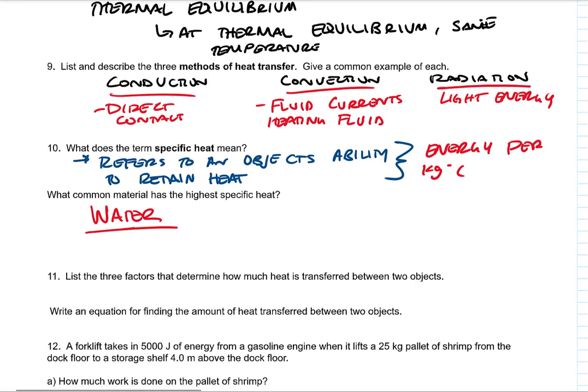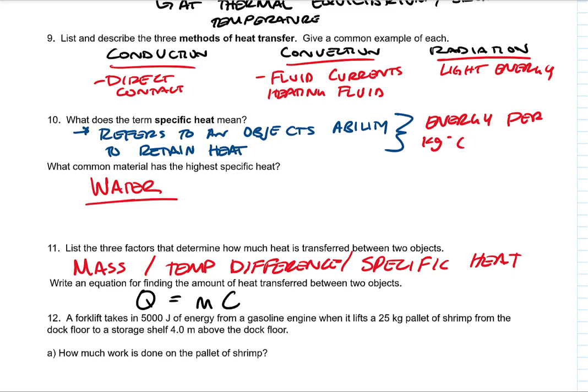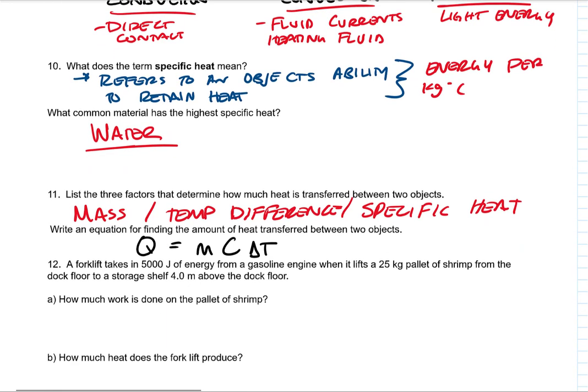List three factors that determine how much heat is transferred between the two objects: the mass of the objects, the temperature difference, and specific heat. Write an equation for finding the amount of heat transferred between two objects. Q is equal to M, the mass, C, the specific heat, times delta T. That is our heat transfer equation.